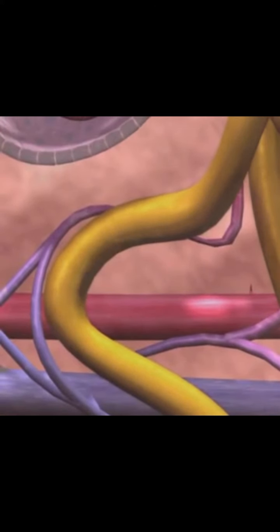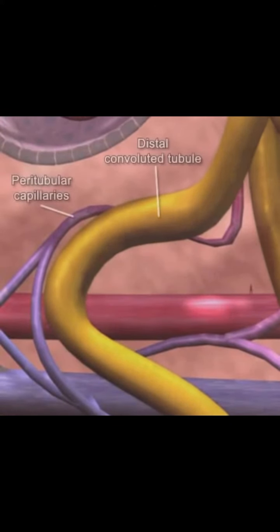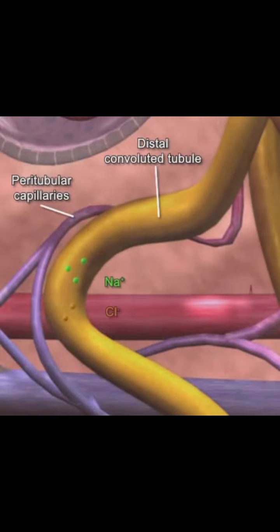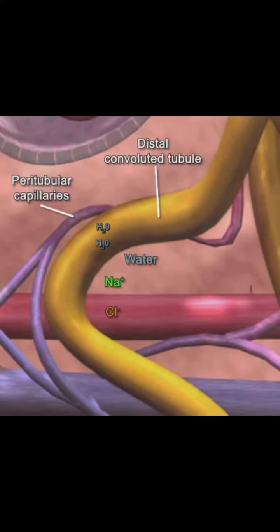Finally, in the distal convoluted tubule, it's the same thing again, but this time it is regulated by a hormone called ADH. Sodium and chloride are once again transported out of the tubule into the blood. Then, water follows.